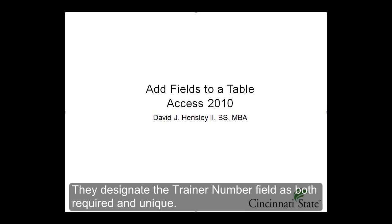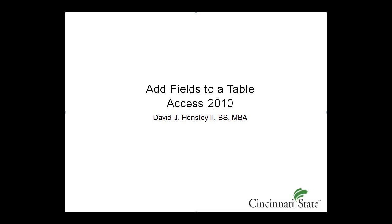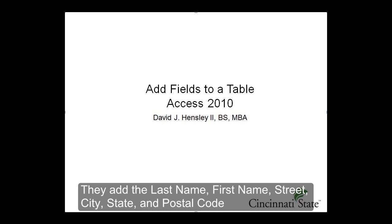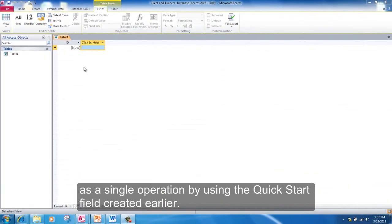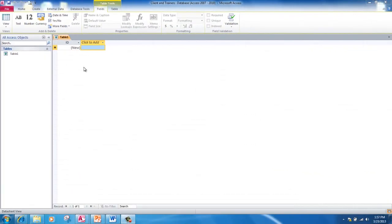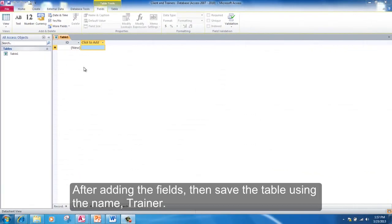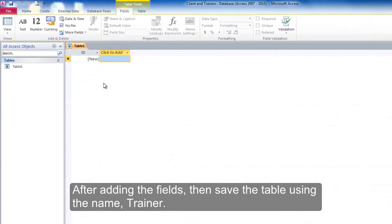They designate the trainer number field as both required and unique. They add the last name, first name, street, city, state, and postal code as a single operation by using the quick start field created earlier. After adding the fields, they save the table using the name trainer.